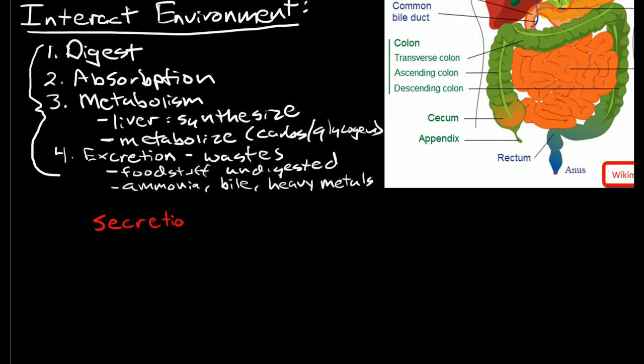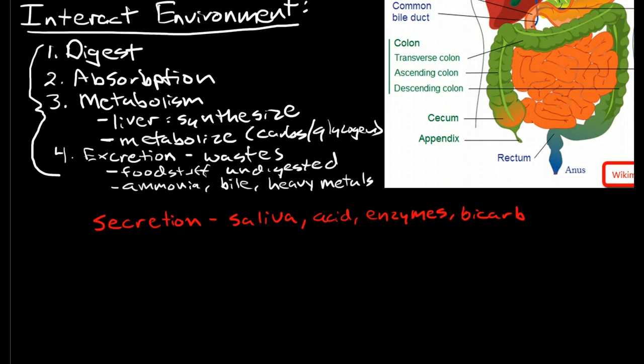So, for instance, it secretes saliva in the mouth to start the digestion process and to aid in mobility of the food bolus down into the lower GI tract. And it secretes acid and enzymes in the stomach and more enzymes in bicarb in duodenum and a bunch of other things. And they are all to aid digestion and absorption in the GI tract.